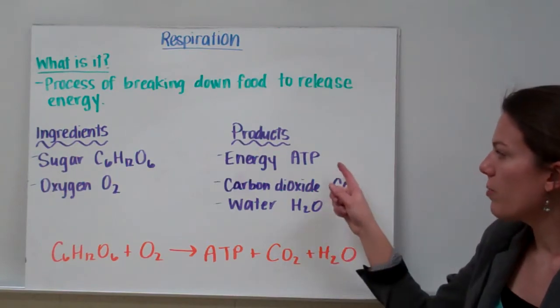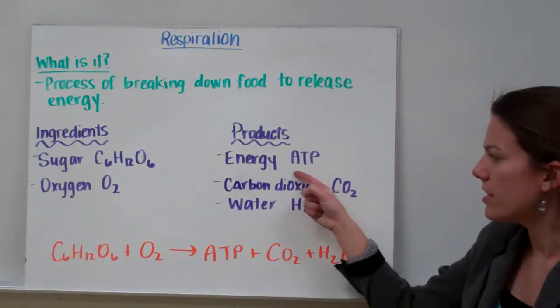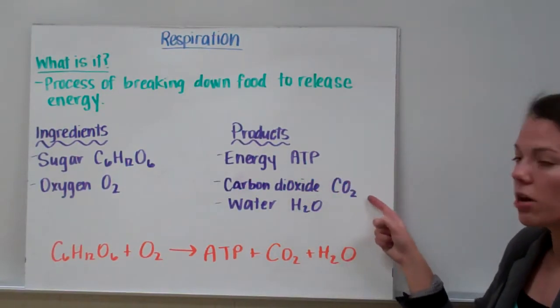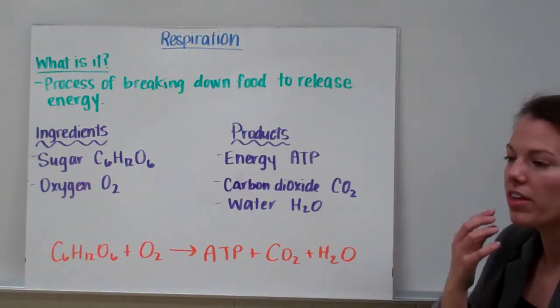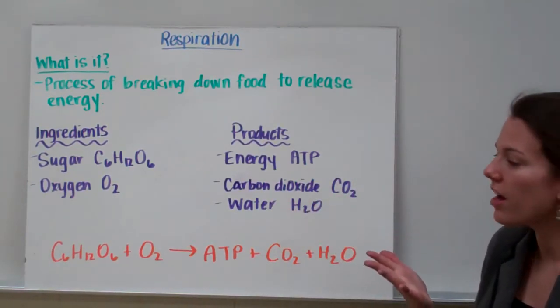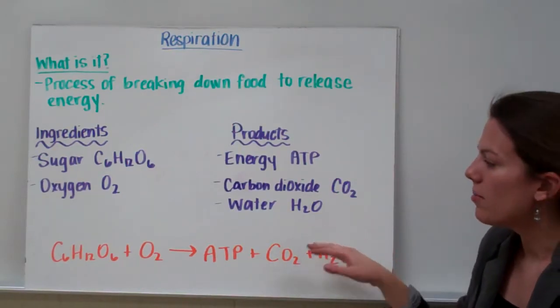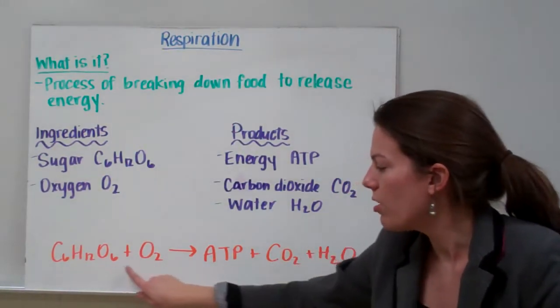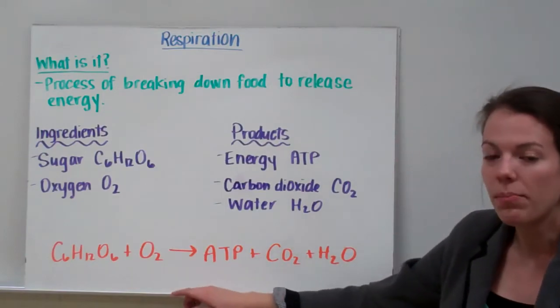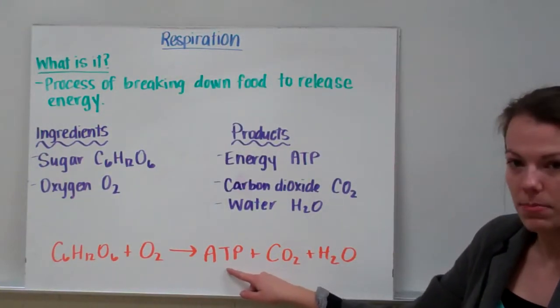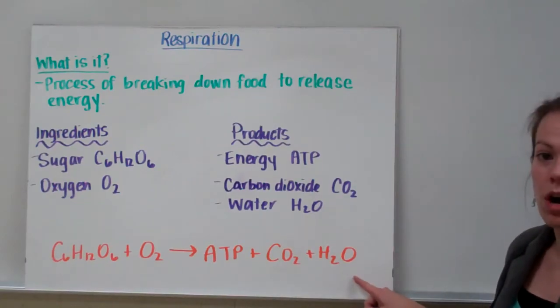We break apart that sugar and release energy. Remember, our energy is ATP. We also release carbon dioxide gas. When you're breathing out, you're releasing carbon dioxide. And we also release some water. Our inputs are glucose and oxygen, and our outputs or products are energy, ATP, carbon dioxide, and water.